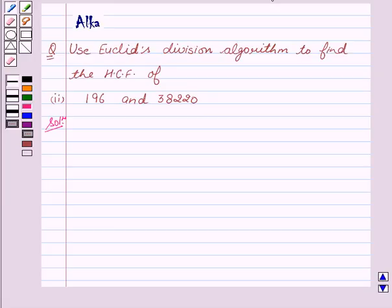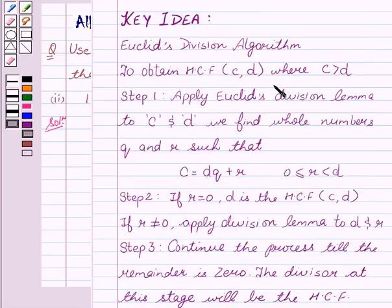Let me tell you the basic idea, which is Euclid's division algorithm. To obtain the HCF of any numbers C and D where C is greater than D, we will apply Euclid's division lemma to C and D. We find two whole numbers Q and R such that on dividing C by D,